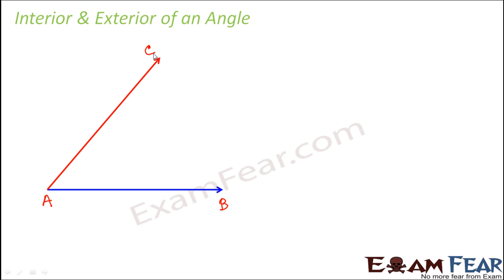Let us name it as A, B, and C. So basically this angle is formed by two rays AB and AC, where A is the vertex.